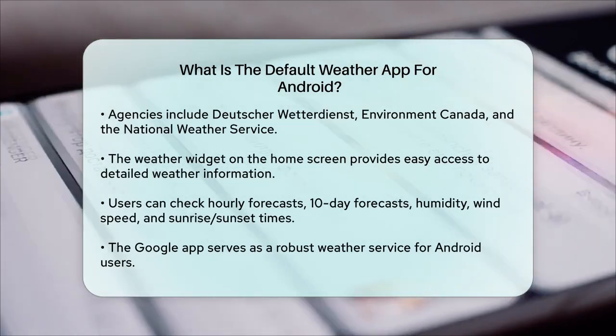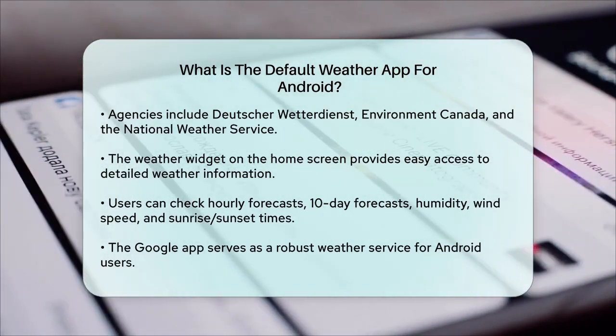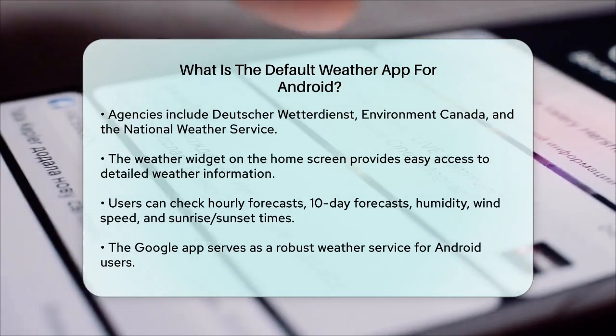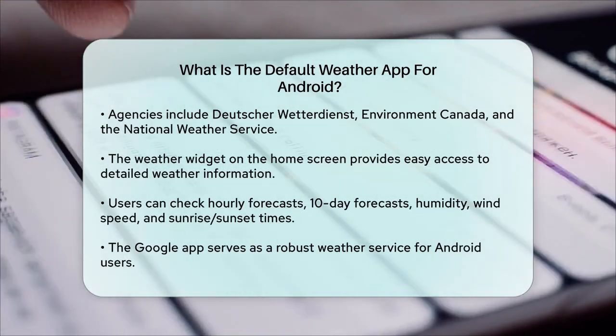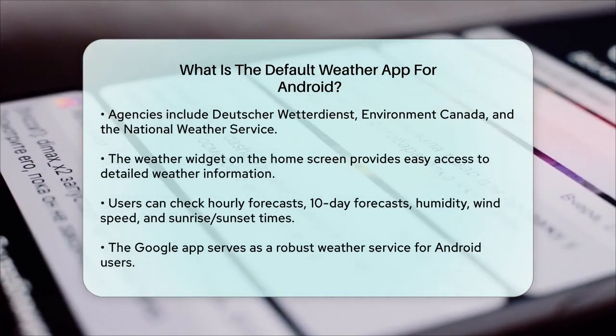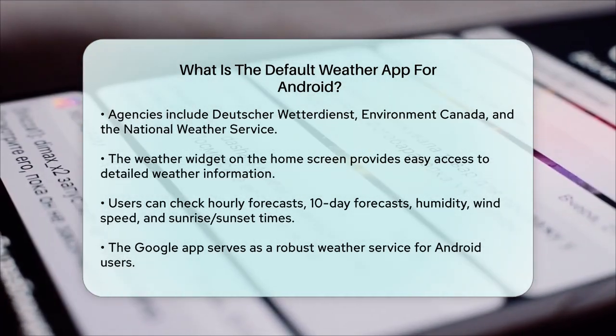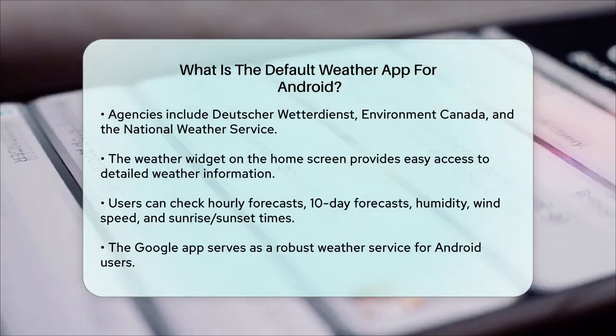You can check multiple sections, including hourly forecasts, 10-day forecasts, and additional details like humidity, wind speed, and sunrise and sunset times.